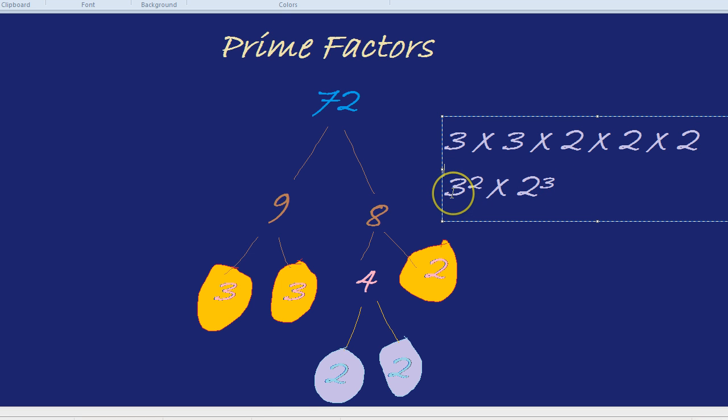So the best way to write that in terms of 72 as a product of its prime factors is 3 squared times 2 to the power of 3. That's a brief introduction to the power and beauty of prime factors.